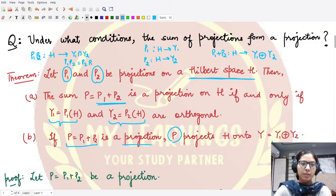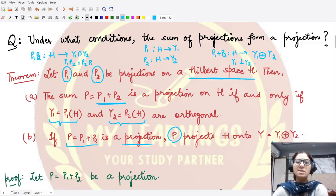In this case, we are saying the space Y1 should be orthogonal to the space Y2. So this is the result about the sum of projections. In the next video we shall be seeing the proof for this particular result.